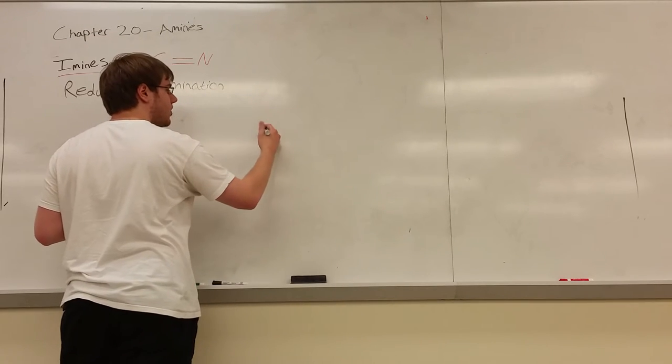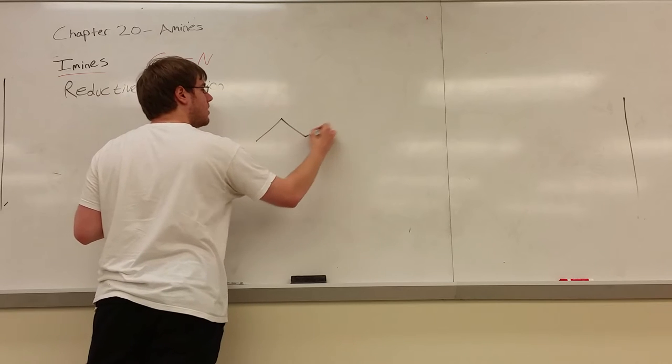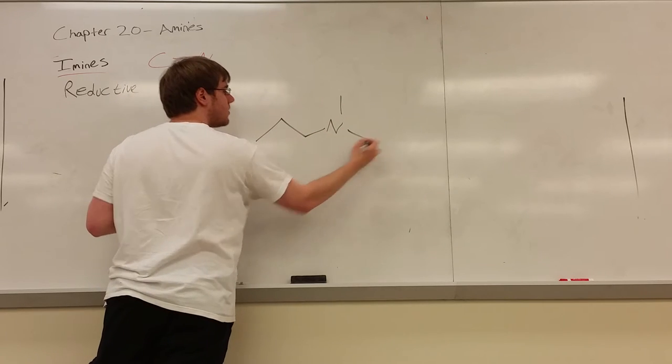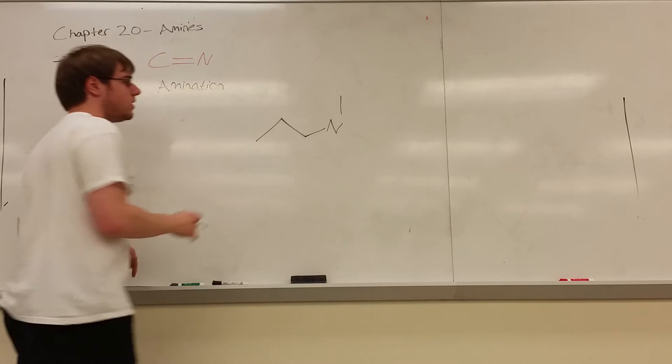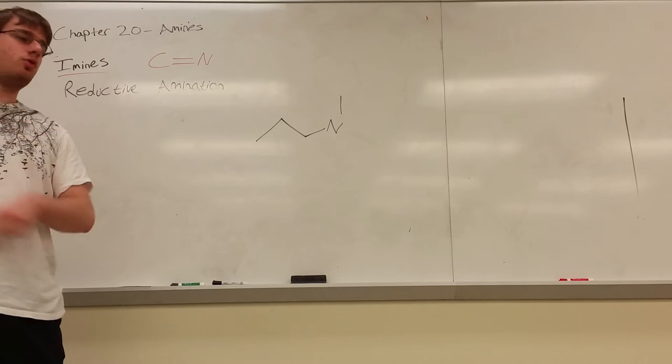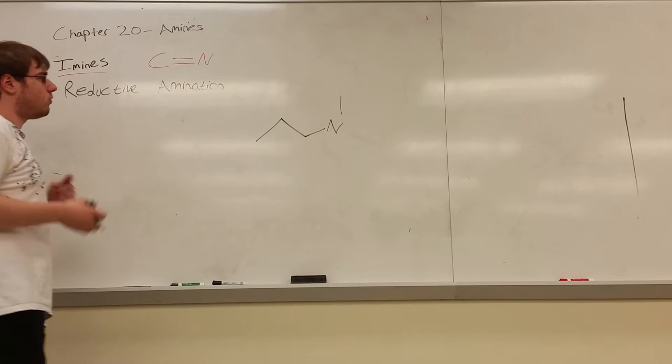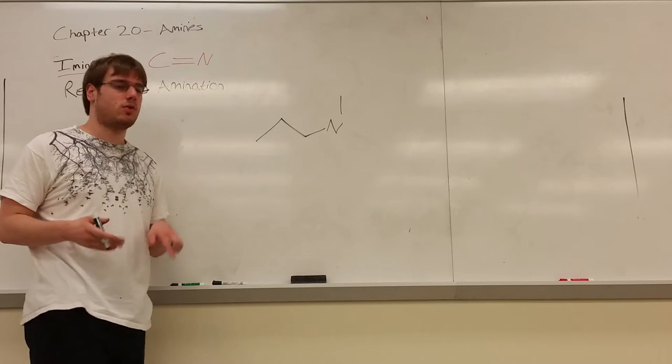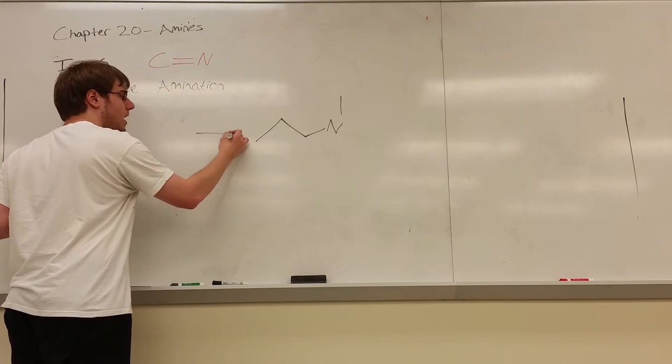Our go-to method of connecting carbons that have nitrogens is this process. For example, let's say we have some carbon chain like this. Let's say we're told to synthesize this from four carbons or less. Well, reductive amination is how you're going to do it. Now, remember, we're going backwards.